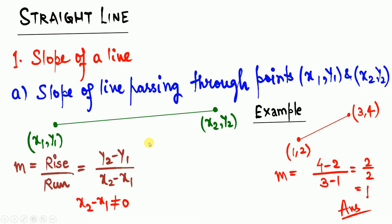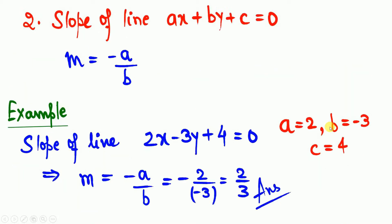See an example: we have two points (1, 2) and (3, 4). When you connect these two points you get one straight line, represented here in red. The slope is m = (4 - 2) / (3 - 1) = 2/2 = 1. So the slope of this line is 1.